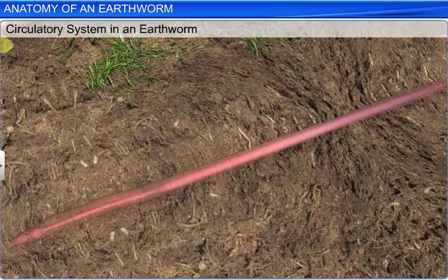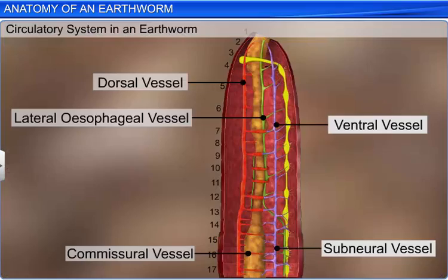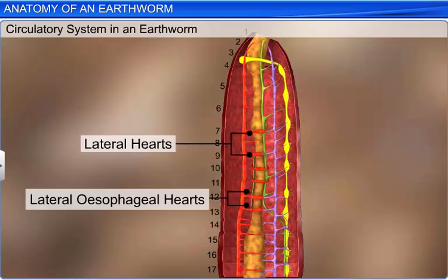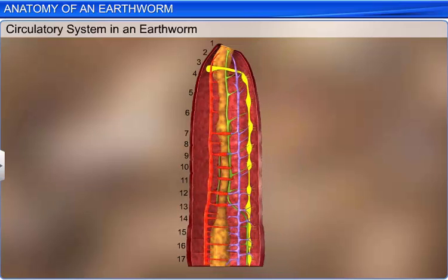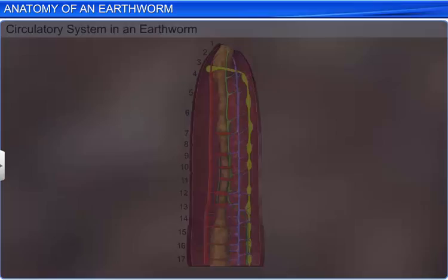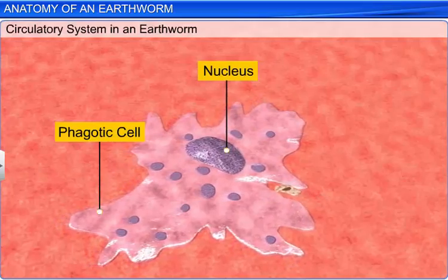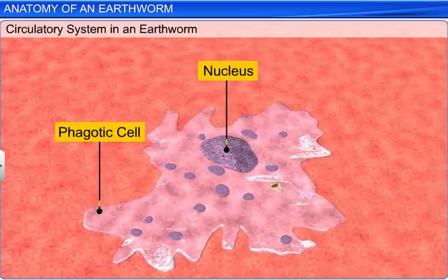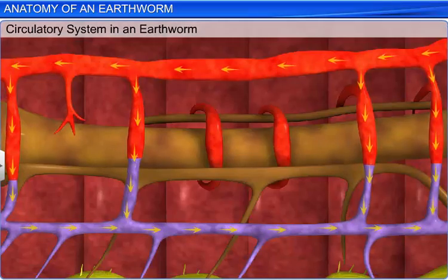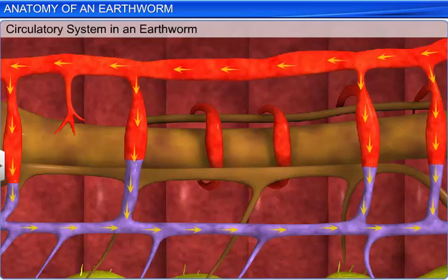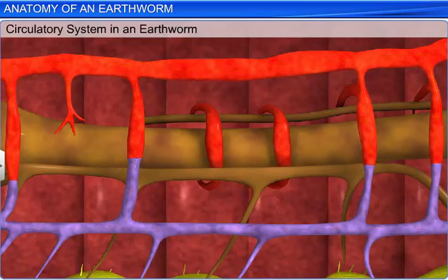The anatomical study also includes the closed circulatory system, which consists of blood vessels, capillaries, and hearts. Small blood vessels supply blood to the gut, nerve cord, and body wall. Earthworms also have blood glands between the fourth and sixth segments that produce blood cells and hemoglobin, which are dissolved in the blood plasma. These blood cells are phagocytic in nature. The hearts help circulate blood in one direction.